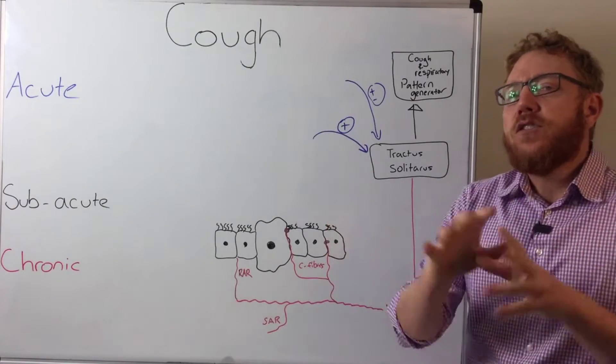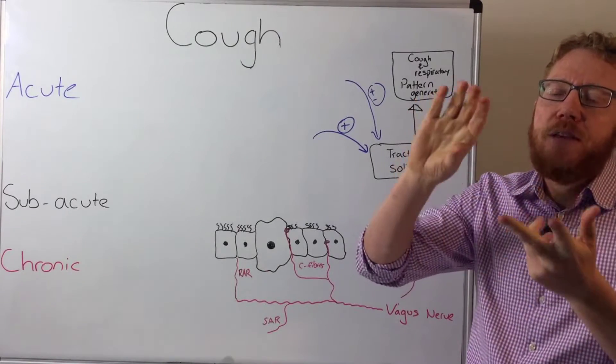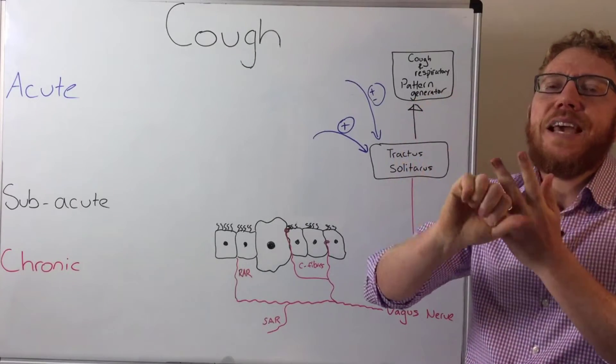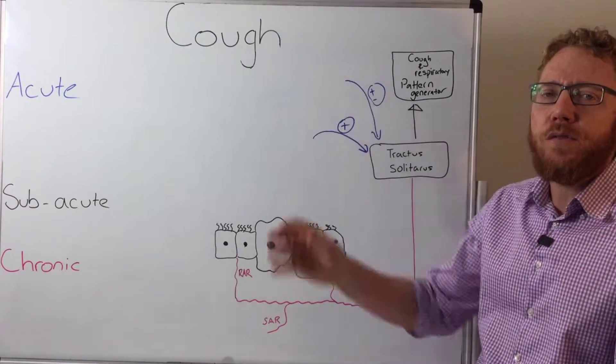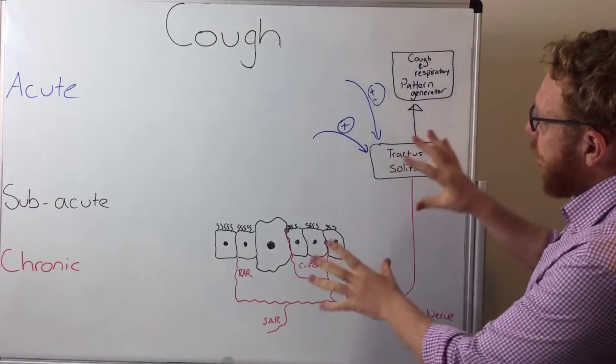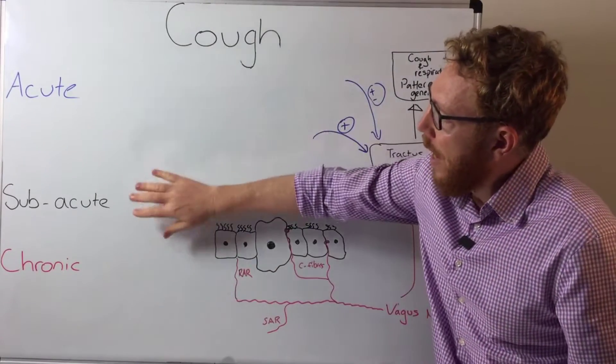Now with all reflexes there's usually three parts to a reflex. There is the sensory component, there's the control center, and then there's the efferent component which is the motor. And that's no different to the cough reflex which we'll cover when we do the mechanism. But let's first start on the way to categorize coughing.